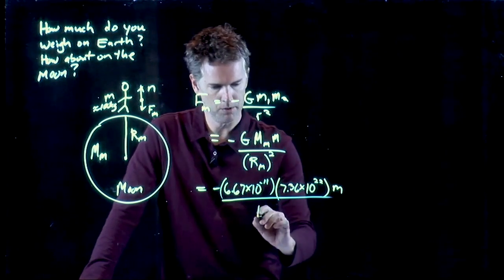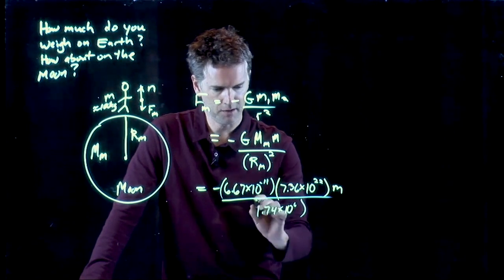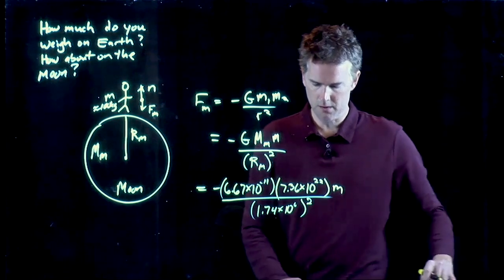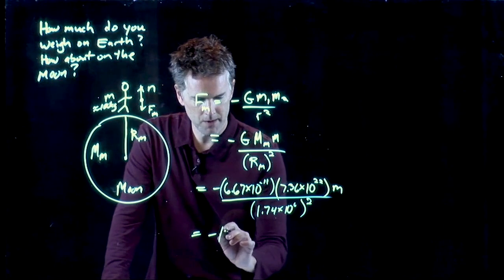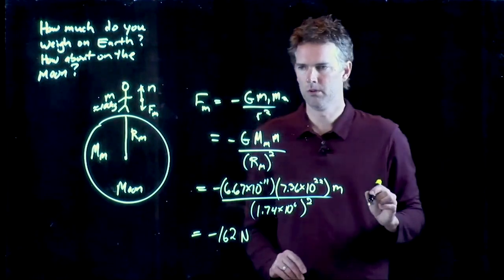The mass of the Moon is 7.36 times 10 to the 22 kilograms. We're going to stay in SI units here. The radius of the Moon is 1.74 times 10 to the 6 meters. And if you punch in all those numbers into your calculator, you should get something around negative 162 newtons.